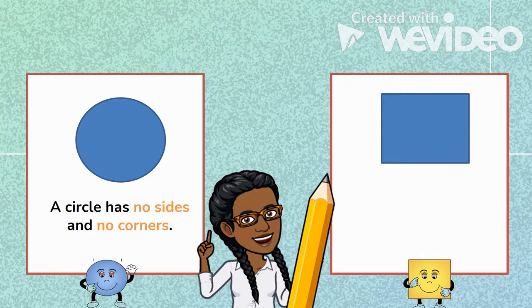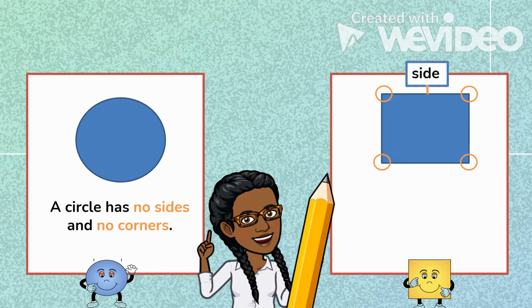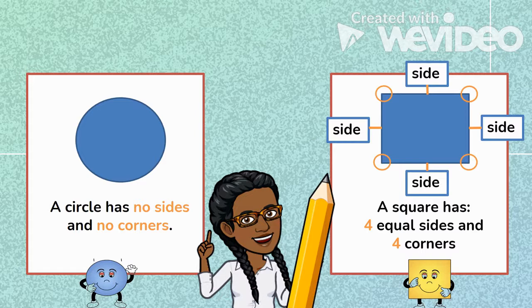Now let us look at the square. A square has one, two, three, four corners. And one, two, three, four equal sides. A square has four equal sides and four corners.